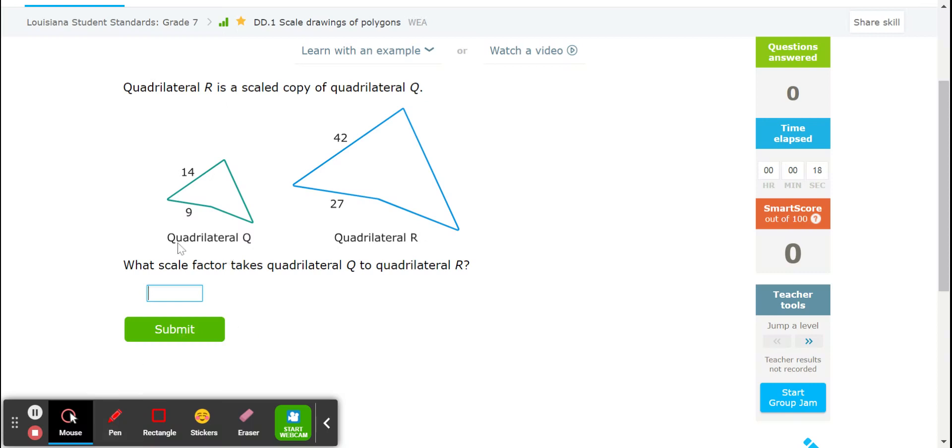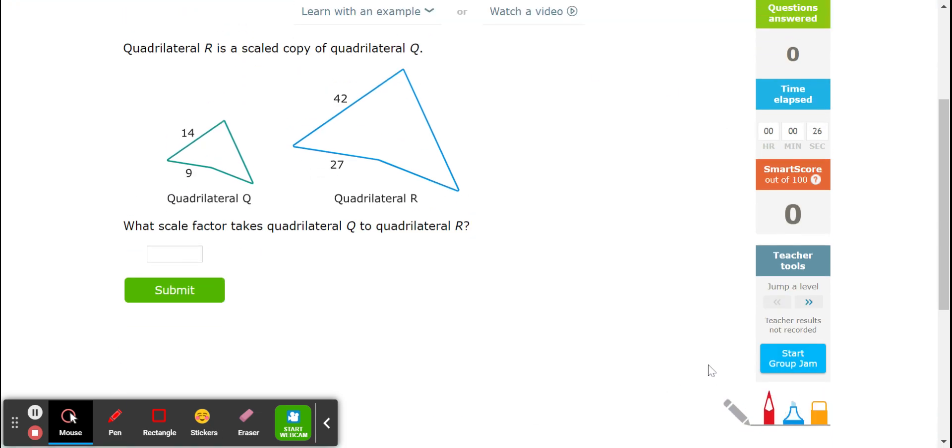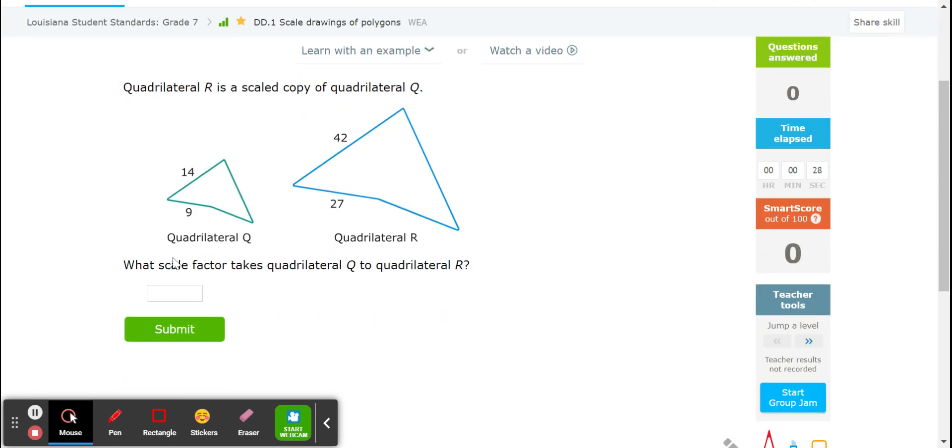Okay, I'm going to show us how to solve up to an 80 smart score for DD1 on scale factor. Alright, I'm going to use the on-screen pencil to help me.